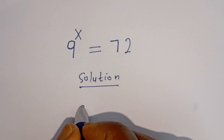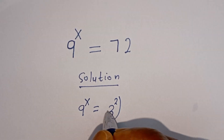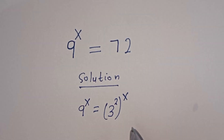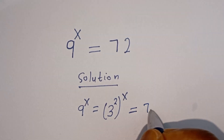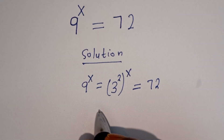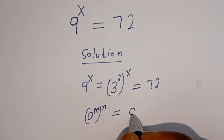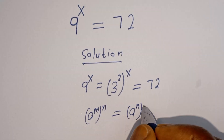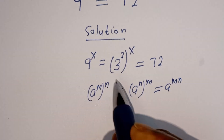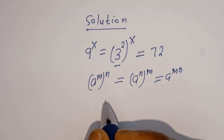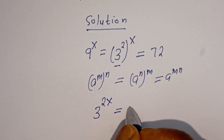9 to the power of s is equal to 3 squared to the power of x, which is equal to 72. Take note that if you have a to the power of m to the power of n, this is equal to a to the power of m times n. Then this can be written as 3 to the power of 2x is equal to 72.